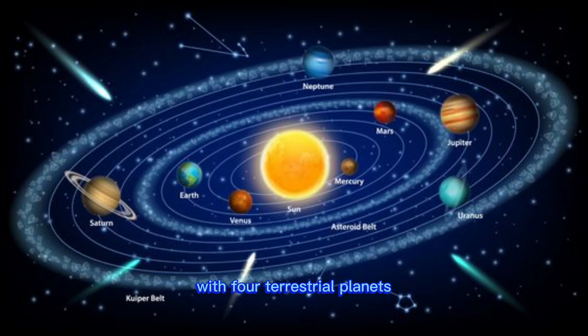The planets orbit the sun in elliptical paths, with four terrestrial planets, Mercury, Venus, Earth and Mars, closer to the sun,